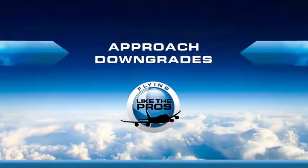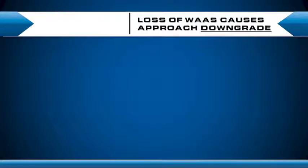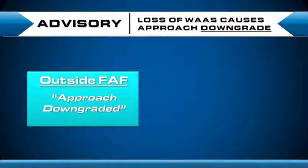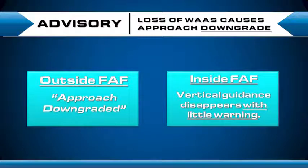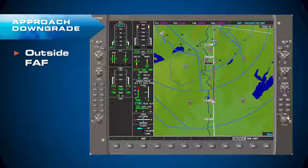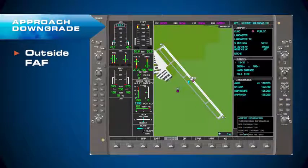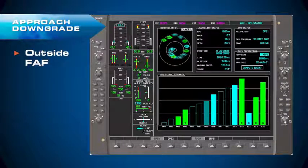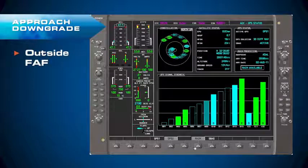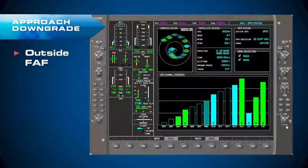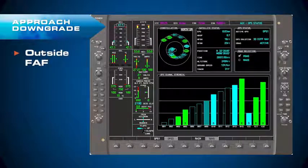One of the big gotchas with multiple levels of service is that the level of service can actually downgrade during an approach. If loss of WAAS occurs outside of the final approach fix, you'll get a message: 'Approach downgraded.' If it happens inside the final approach fix, vertical guidance disappears with little warning. A neat instructor trick is to go to the multifunction display, AUX chapter GPS status page, choose the SBAS soft key — Space Based Augmentation System — and deselect WAAS to simulate an approach downgrade for the student.